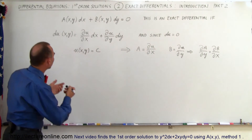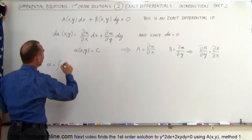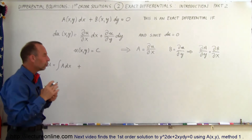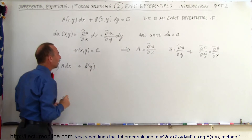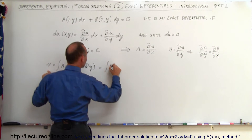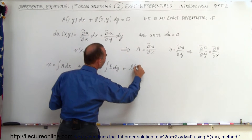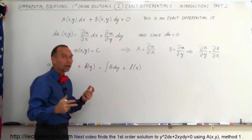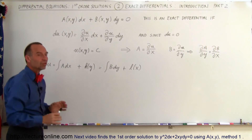In order to solve for u, u can be defined as the integral of a times dx plus a constant of integration, which will be expressed as a function — let's call it k — which contains the variable y. Or we can also find u by taking the integral of b times dy plus some other function, let's call it l, which is a function of x. We don't yet know what k or l are; these are functions we need to determine through the process.